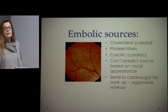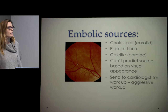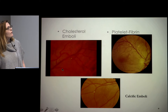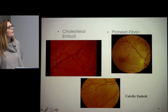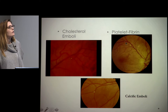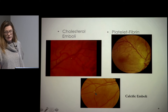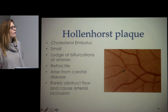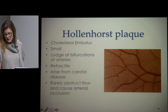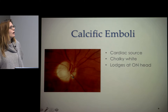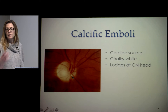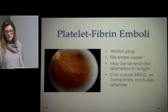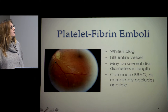These patients need a pretty aggressive workup through their primary care doctor or cardiologist. Looking at examples of emboli: a cholesterol or Hollenhorst plaque is often at a vessel bifurcation and is very refractile — this comes from the carotids, but it's actually quite rare for it to obstruct flow enough to cause an arterial occlusion. A calcific embolus is typically seen right at the optic nerve head and is associated with central retinal artery occlusion — it has a chalky white appearance and comes from the heart. Platelet fibrin fills the vessel completely and can lead to arterial occlusion.